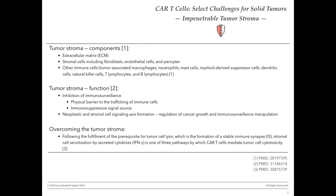The next issue is the impenetrable tumor stroma. The stroma is composed of the extracellular matrix, stromal cells including fibroblasts, and additional immune cells including myeloid-derived suppressor cells. In addition to serving as a physical barrier to immune cell trafficking, the stroma can also be a source of immunosuppressive signals. Overcoming the tumor stroma is definitely a challenge. Tumor cell lysis requires the formation of the immune synapse, and secreted cytokines can sensitize the stroma in one of three pathways by which CARs mediate cytotoxicity.